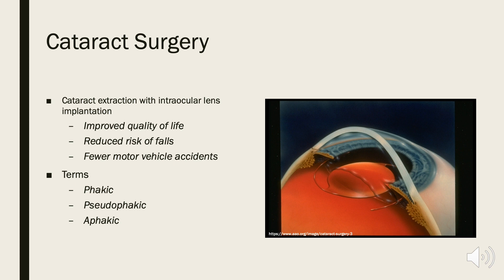Cataract surgery is one of the most common and successful surgeries. It's been associated with improved quality of life, reduced risk of falls, and fewer motor vehicle accidents in patients with visually significant cataracts. Although there are different types of cataract surgery, the goals are the same: to remove the cataract and replace it with an artificial intraocular lens. The term phakic means an individual has their own natural lens, pseudophakic means the natural lens was removed and replaced with an artificial intraocular lens, and aphakic means the natural lens was removed but not replaced and the patient is without a lens. For more information on cataract surgery, visit the American Academy of Ophthalmology's website.